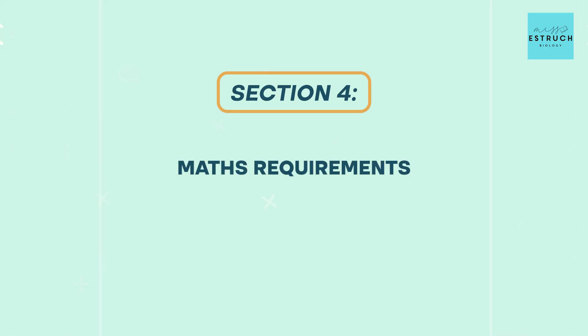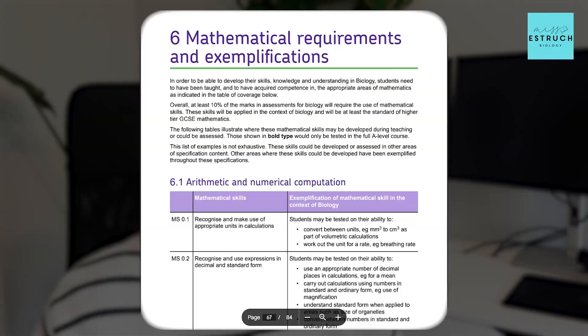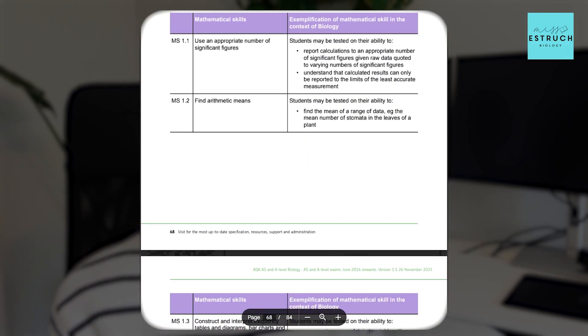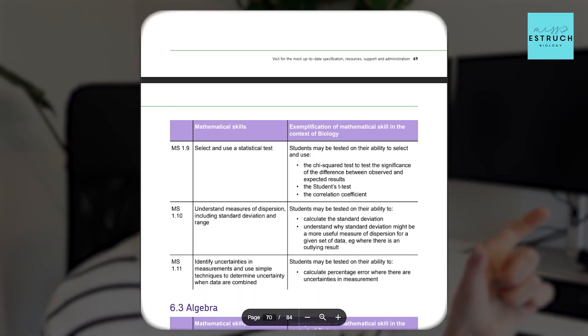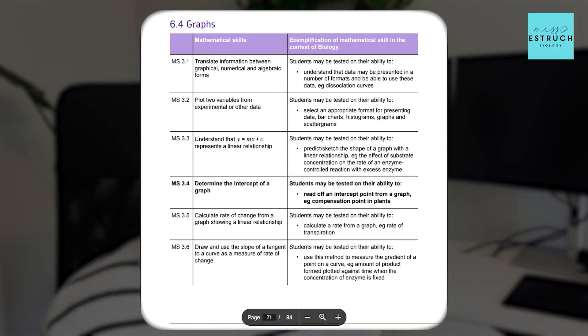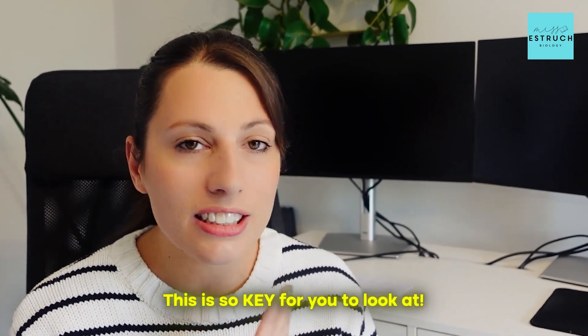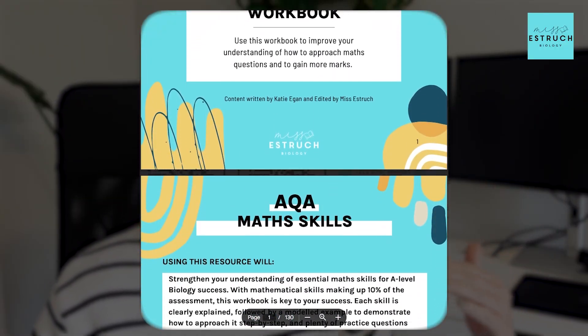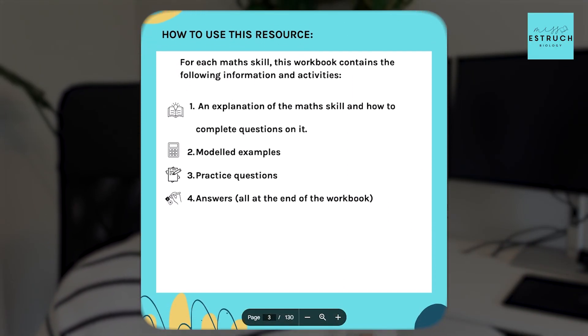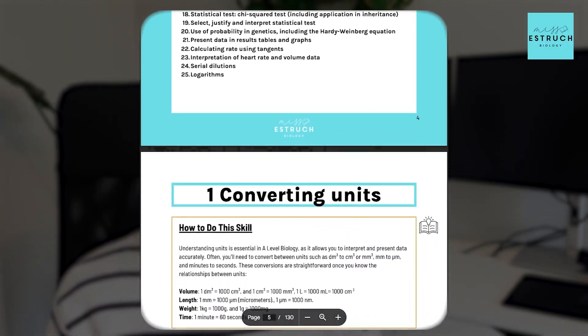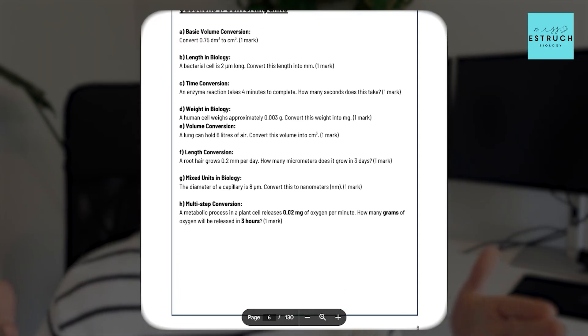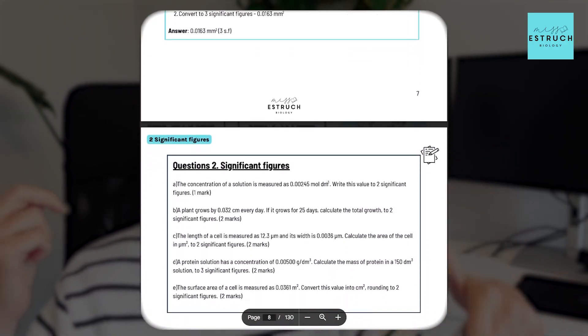The last two parts of the specification start with the maths requirements section. This section is gold and most students either don't know it exists or don't look at it. It lists every single maths skill you could be assessed on and an example of how it's relevant in biology. For someone who finds maths challenging, this is key for planning your revision. I've gone through this part of the spec with my team and created a maths workbook that explains all those skills, models exam questions, and gives you exam questions with answers to practice — to get those 10% of marks linked to maths.